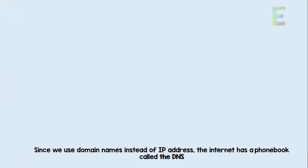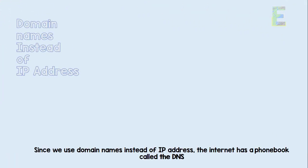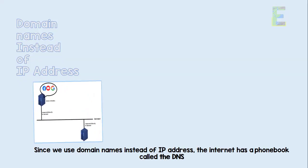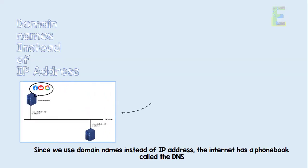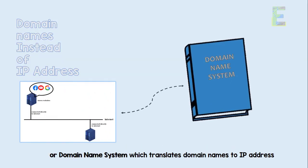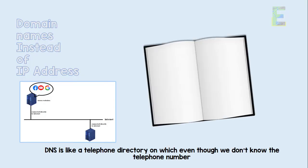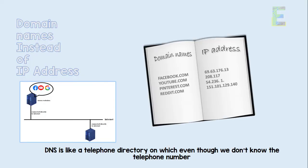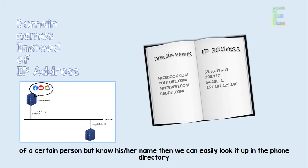Since we use domain names instead of IP addresses, the Internet has a phonebook called the DNS, or the Domain Name System, which translates domain names to IP addresses. DNS is like a telephone directory — even though we don't know the telephone number of a certain person but know their name, we can easily look it up in the phone directory.